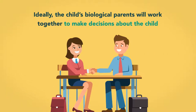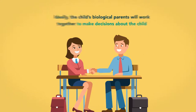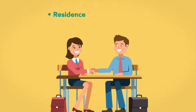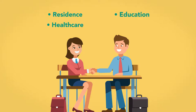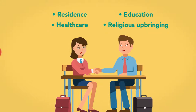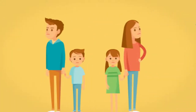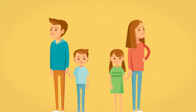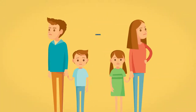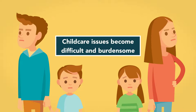Ideally, the child's biological parents will work together to make decisions about the child, such as the child's residence, health care, education, and religious upbringing. This isn't always possible, however. Due to a divorce's often contentious nature, child care issues become difficult and burdensome.